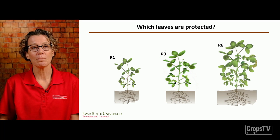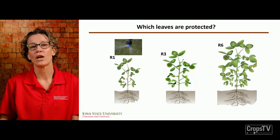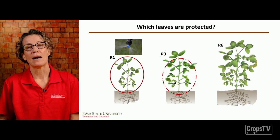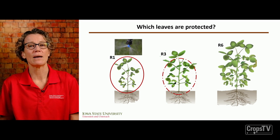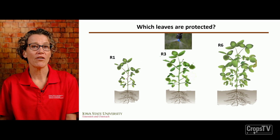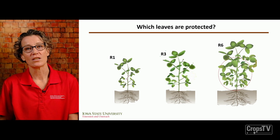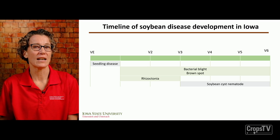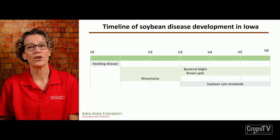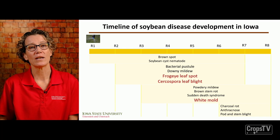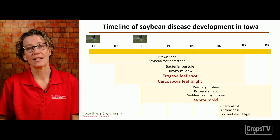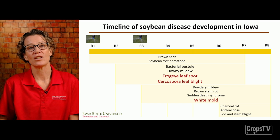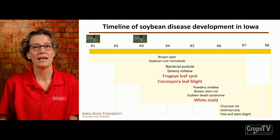For soybean: some farmers apply a fungicide at R1, possibly for white mold, which protects the entire canopy. But since we have indeterminate soybeans in Iowa, they're continually putting on new leaves, which would not be protected by that R1 application. An R3 application then protects those newer leaves. Looking at the timeline of soybean disease development in Iowa, the R3 application is the best timing to manage not only white mold but also frogeye leaf spot and Cercospora leaf blight.